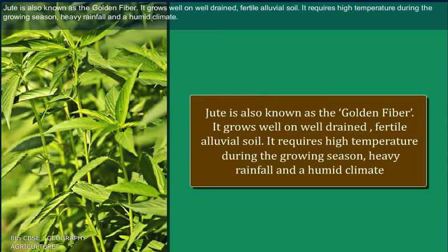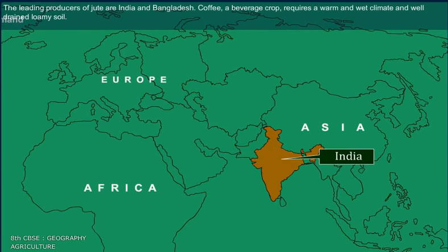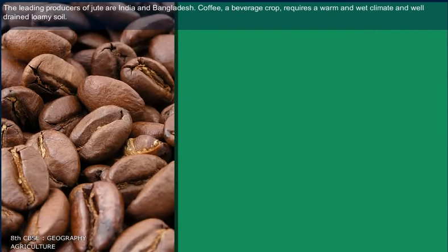Jute is also known as the golden fiber. It grows well on well-drained fertile alluvial soil. It requires high temperature during the growing season, heavy rainfall, and a humid climate. The leading producers of jute are India and Bangladesh.